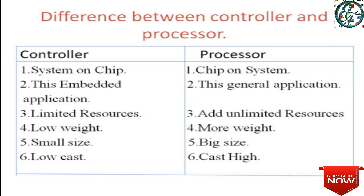For a processor IC, only the ALU unit is available on the chip. RAM and ROM are used externally. The controller is used for embedded applications, while the processor is used for general purpose applications. The processor also has limited on-chip resources.